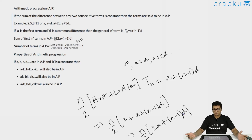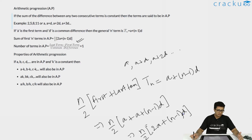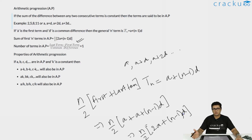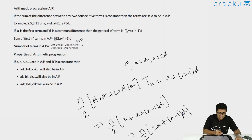These are probably the two most important formulas, and they can help you solve multiple questions. Now let's look at some properties of arithmetic progression. Because two terms in an AP have a common difference, we have the property that a minus k, b minus k, and c minus k will still be an arithmetic progression, since k is a constant subtracted from each term.